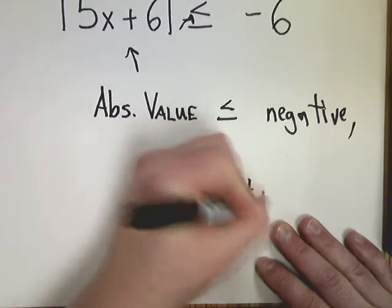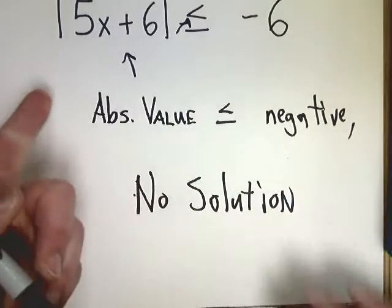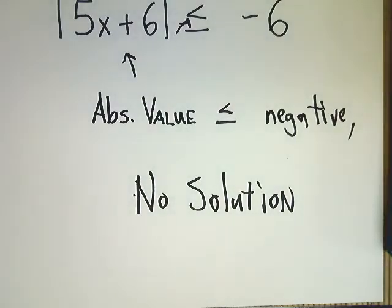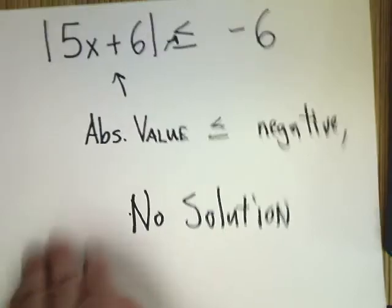Because no matter what you plug in for the value of x, it's still not going to make that absolute value somehow be smaller than negative, because we know that absolute values have to be greater than a negative, so that's impossible. So, this is a no solution question.